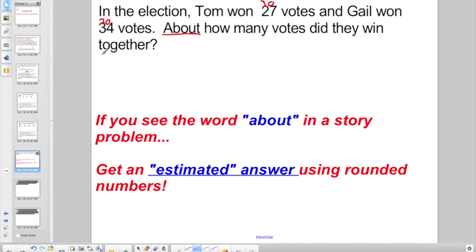And they want to know how much they won together. 30 plus 30 to figure out all together, right? Do I even need to put this down on paper? Can you figure out 30 plus 30 in your head? I am sure hoping so. They got about 60 votes. It would be closer to 61 votes if you did it for real, but we're using estimated rounded numbers.